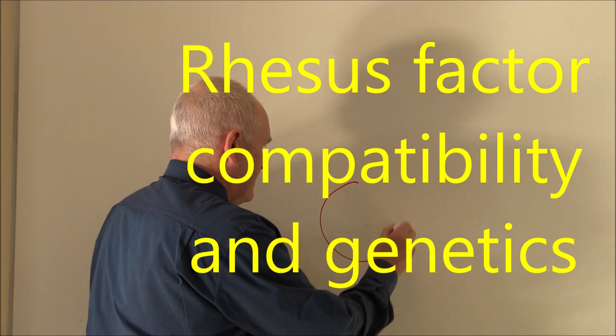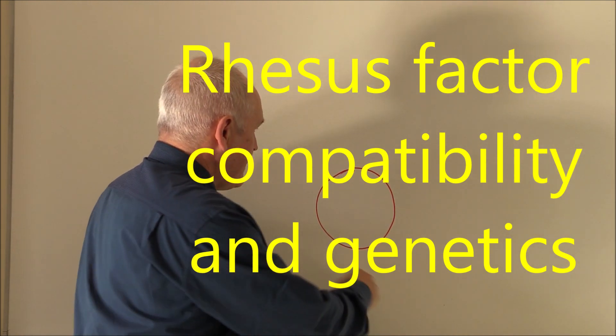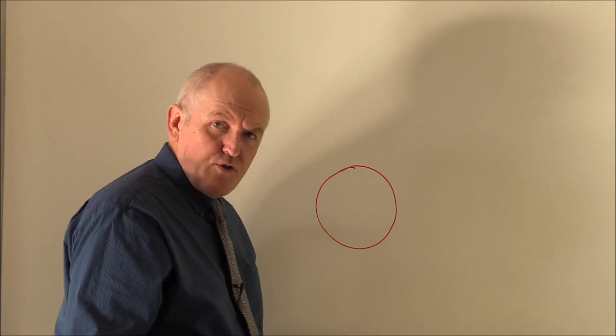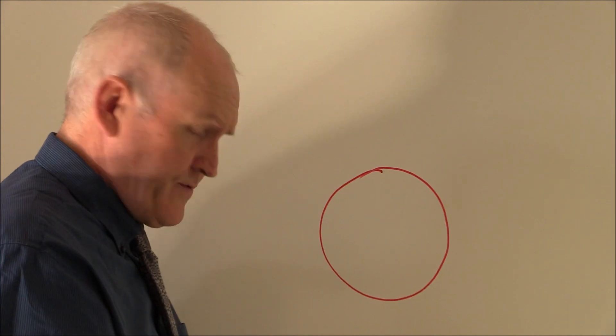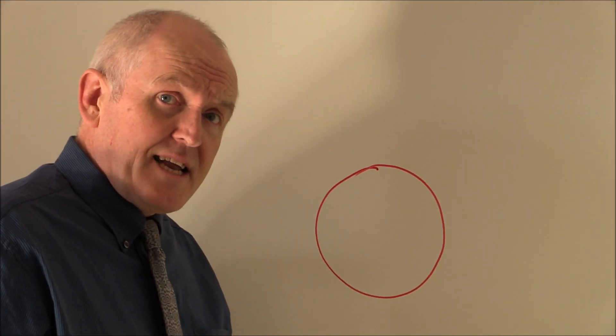Here we have a red blood cell, an erythrocyte, and we know that the A, B, O group antigens are on the surface of the red cell. And with the Rhesus factor, it's exactly the same.